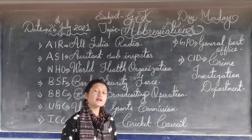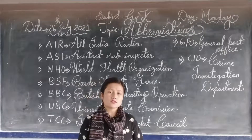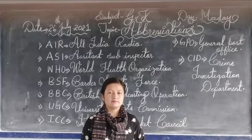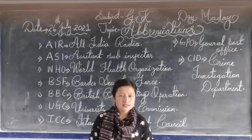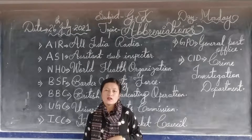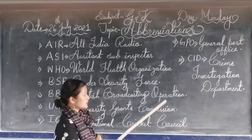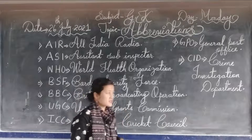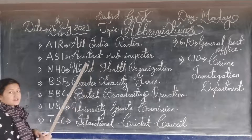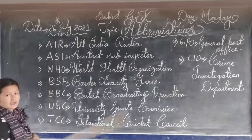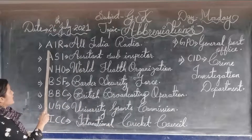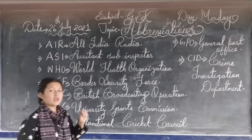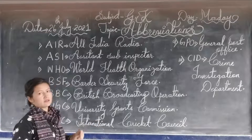I hope everyone has done the previous works in your book as well as in your copy, and has learnt also at home. You need to write this work and learn it too, like the previous works. So let's start with number 1. Here it is written A-I-R-L. We have to write the full form of A-I-R-L.